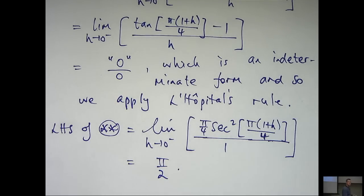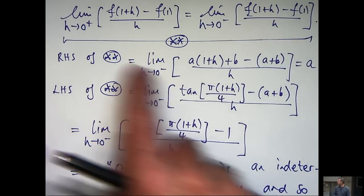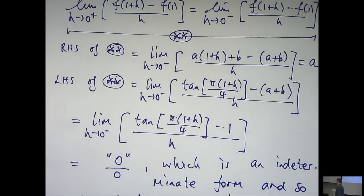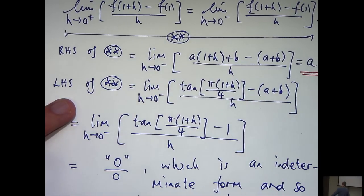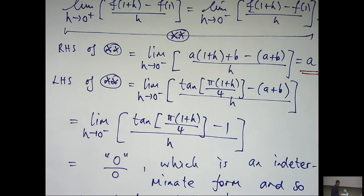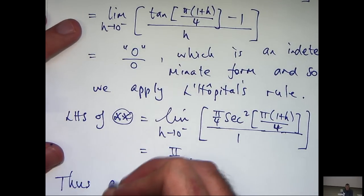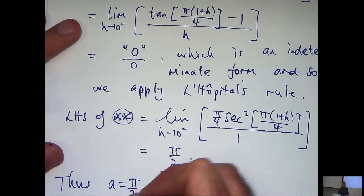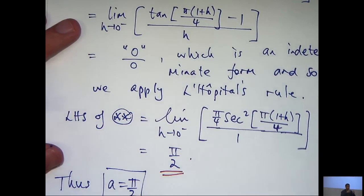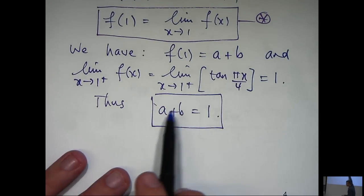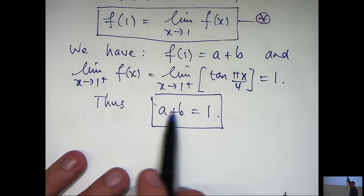So what have we accomplished there? The right-hand side of double star we calculated to be a. The left-hand side of double star is π on 2. So, we know now that a must be equal to π on 2. We now have a value for a. And if we go back to our earlier part a, a plus b equals 1.